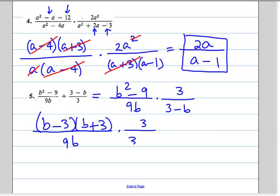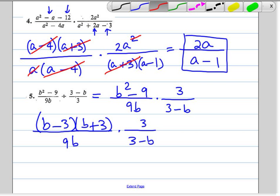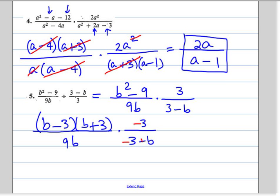Because we want to change this 3 minus B to something that we can reduce, what we're going to do is multiply both top and bottom by negative 1. So this is going to change to negative, this is going to change to negative, this is going to change to negative, that's going to be positive.